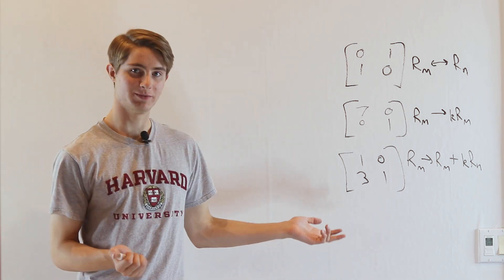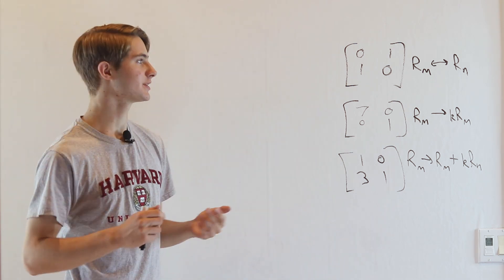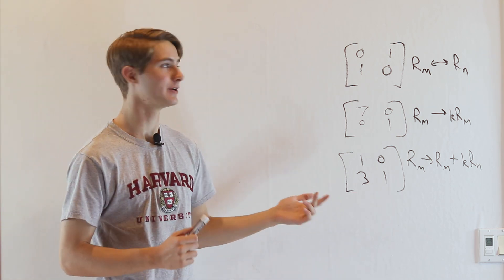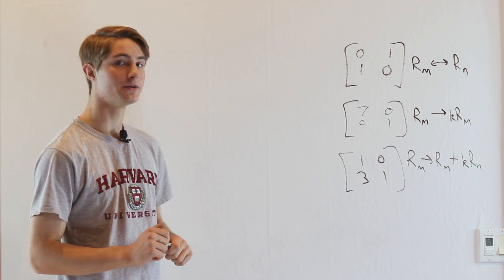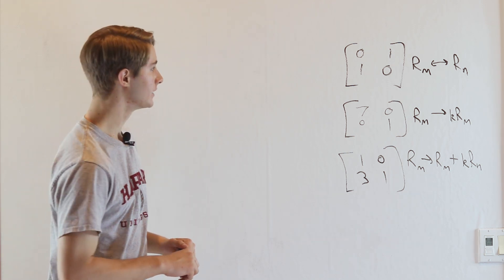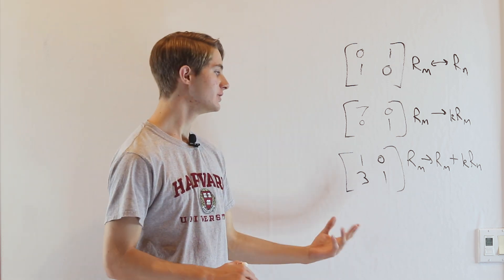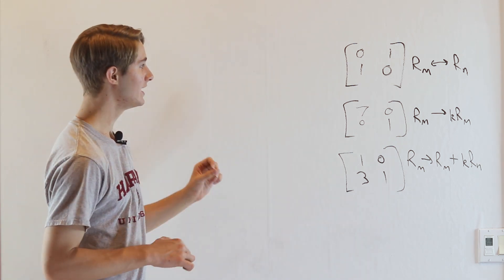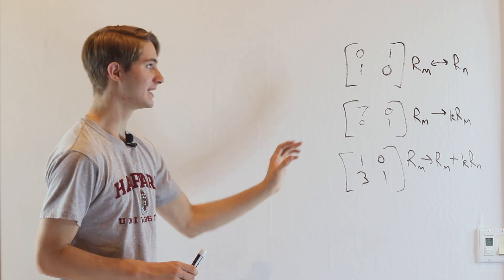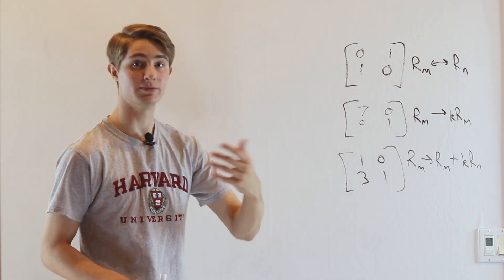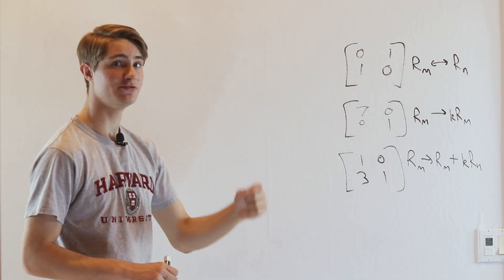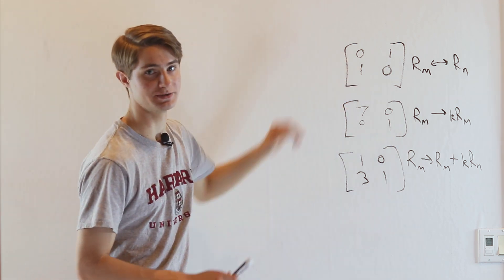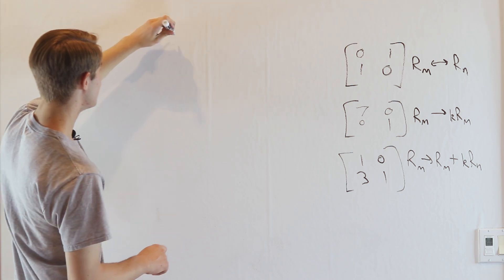So that's the definition of elementary matrices, which is nice, but why do elementary matrices get their own name? Why are they so important? We're going to talk about why they're important later, but there's one specific interesting property: left multiplying an elementary matrix by some other matrix has the same effect as performing the row operation that produced this elementary matrix. Let's look at an example.